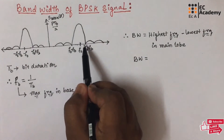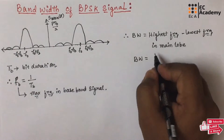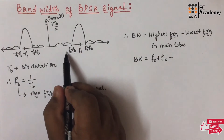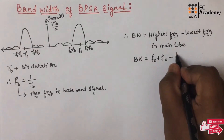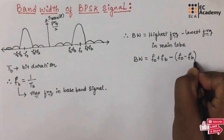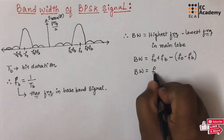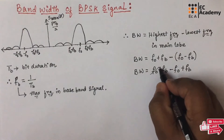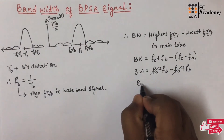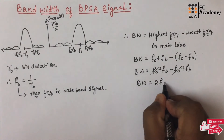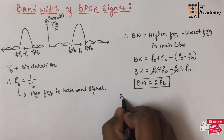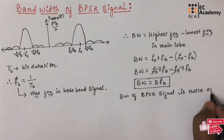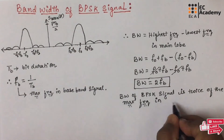if you consider this main lobe, the highest frequency is F0 plus FB. So, we can write bandwidth is equal to F0 plus FB minus (F0 minus FB). We can cancel out the F0 terms and we will get the bandwidth of BPSK signal as 2FB. So, we can say the bandwidth of BPSK signal is equal to twice of the maximum frequency in the baseband signal.